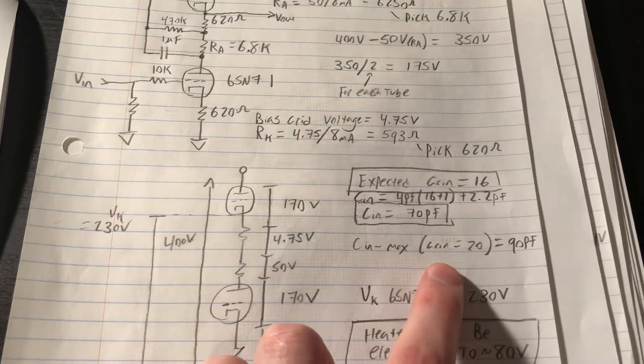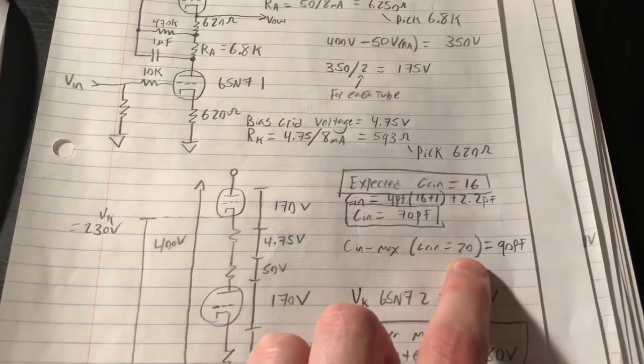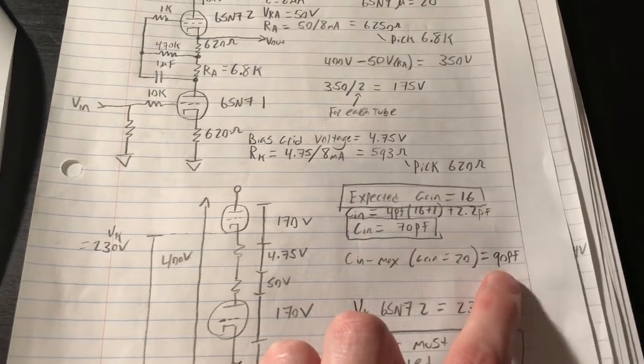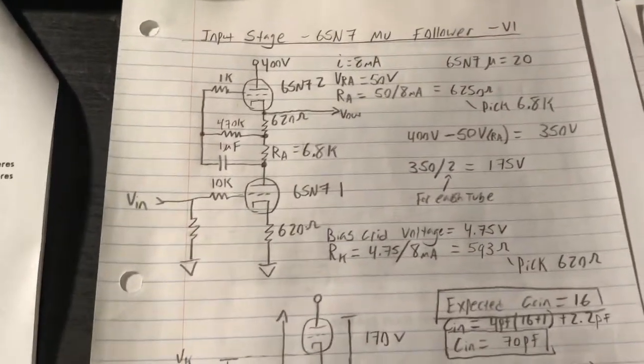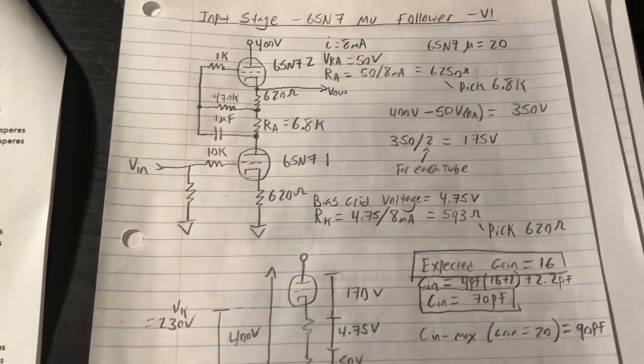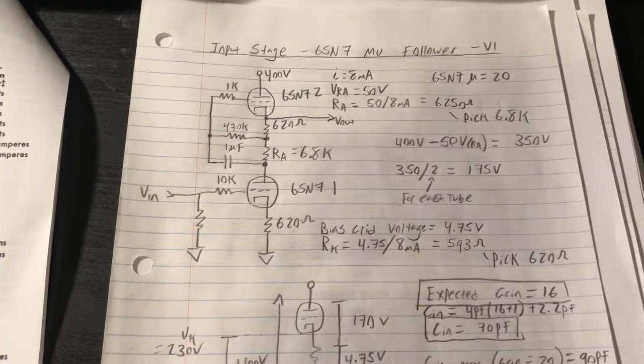Input capacitance of the stage is maximized for a single tube because we're getting maximum gain. If we assume a gain of 20 with a 6SN7 because of the Miller capacitance, we should get about 90 picofarads of input capacitance. That's kind of a quick overview on how this stage works and indeed does work very well.